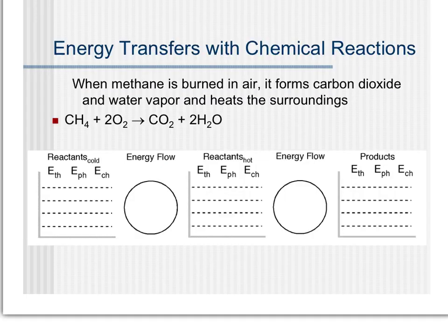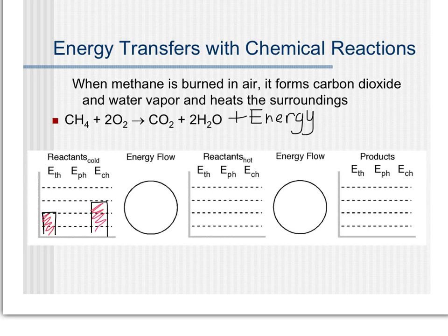Now we'll look at an example of an exothermic reaction. Here it says methane is burned in air — it forms carbon dioxide and water vapor, and it heats the surroundings. So energy is going to be a product this time and is going to be leaving the system. But that energy can't leave until after the reaction happens, because the reaction is what's actually releasing this energy. Starting with an arbitrary number of bars — let's do two thermal and three chemical. The important thing is the change between the energy at the beginning and the end, not the absolute amount. In an exothermic reaction, the step where energy leaves the system always happens second.